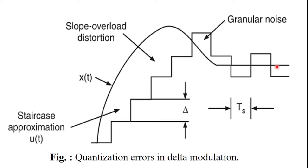This figure shows that when the input signal is almost flat, with small variation in the input signal, the staircase signal u(t) keeps on oscillating by plus or minus delta around the signal. The error between the input signal and the staircase approximated signal is called granular noise.